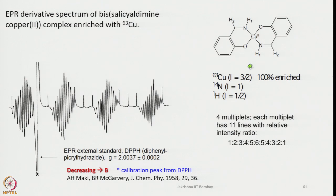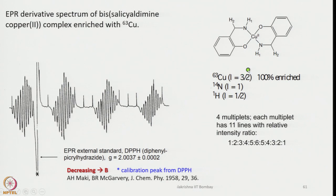Here is another interesting copper complex where Cu²⁺ is present, and copper has I = 3/2. This is a ⁶³Cu-enriched product with only ⁶³Cu. Next to the copper we have 2 nitrogen atoms (¹⁴N, I = 1), and then 2 different types of hydrogen atoms. The 2 nitrogen atoms and 2 hydrogen atoms are each in equivalent pairs. So the coupling begins: I = 3/2 splits into 4 lines, then each line is further split by the 2 nitrogen atoms and then by the 2 types of hydrogen atoms.